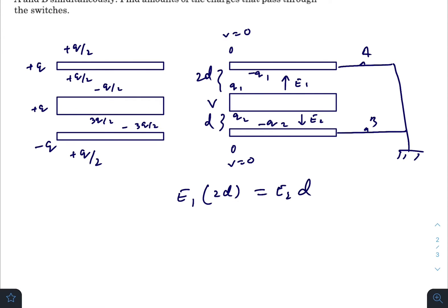E1 is sigma divided by epsilon naught, so we can write q1 over A epsilon naught times 2 equals q2 over A epsilon naught times 1.